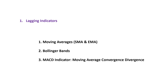And finally, third, MACD indicators. Moving Average Convergence Divergence measures the relationship between two moving averages and is used to identify changes in the strength, direction, momentum, and duration of the trend. Let's dive deeper into lagging indicators with some practical examples to illustrate their impact on trading decisions and profitability.